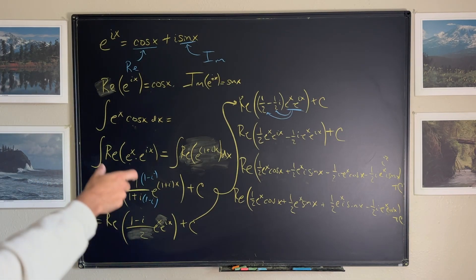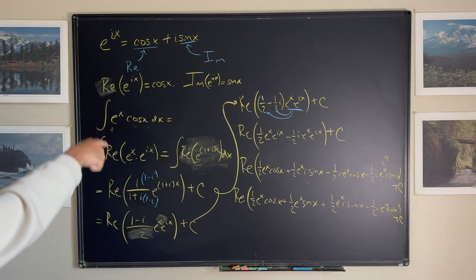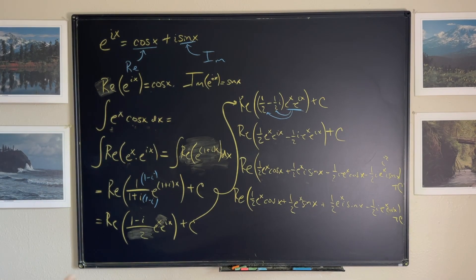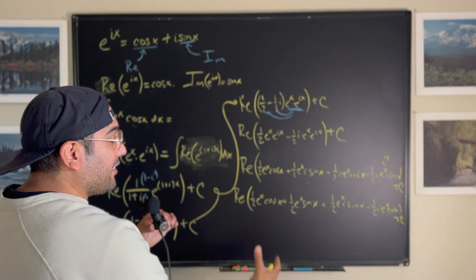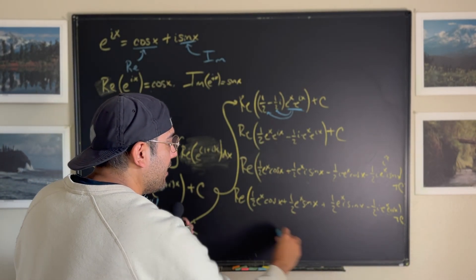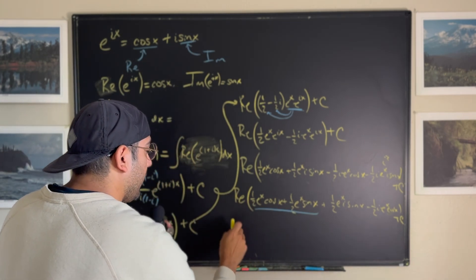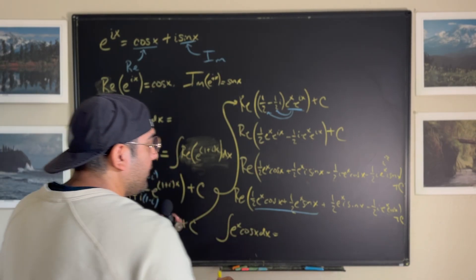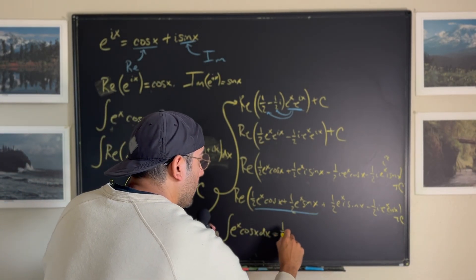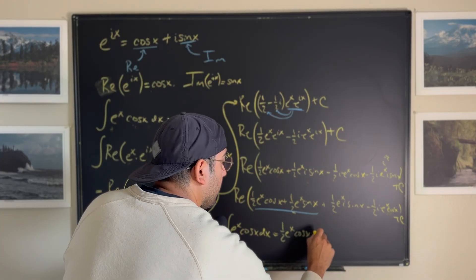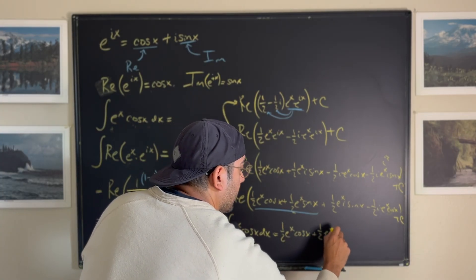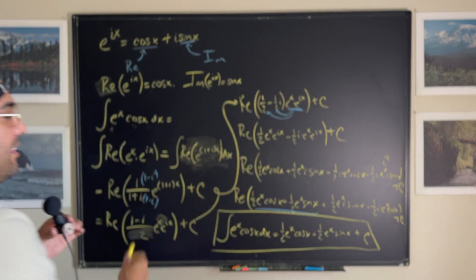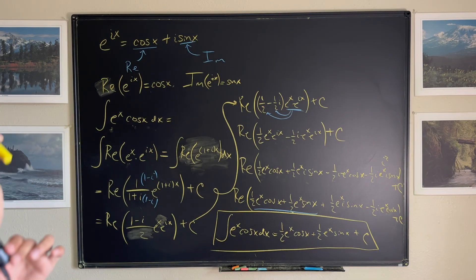Final step: remember we're integrating e to the x cosine x, so we take the real parts of our solution. That gives us the integral of e to the x cosine x equals one half e to the x cosine x plus one half e to the x sine x, plus C. And we have finished finding the integral of e to the x cosine x using the Euler formula.